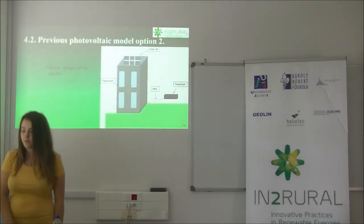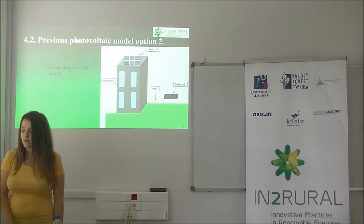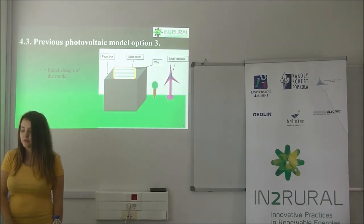The second previous photovoltaic model is made from paper board — the paper board is simulated as a house — with an upward-placed solar cell, wire, and copper bag, and so on. The third previous photovoltaic model is made from a small ventilator, wire, solar panel, and paper components.